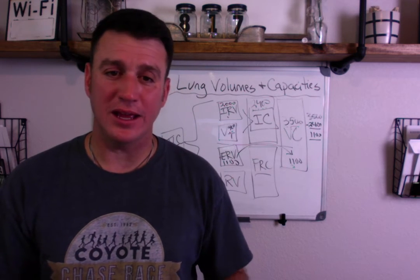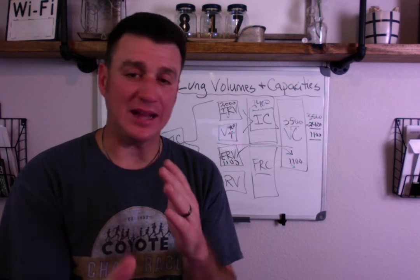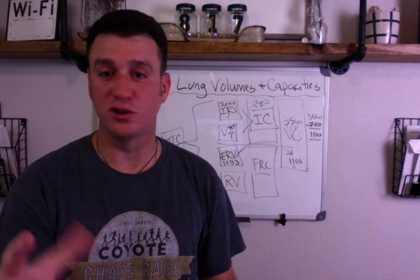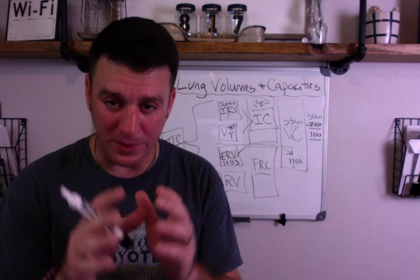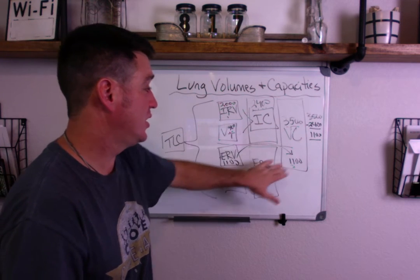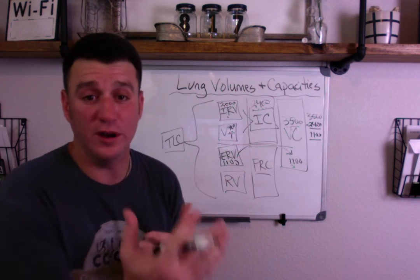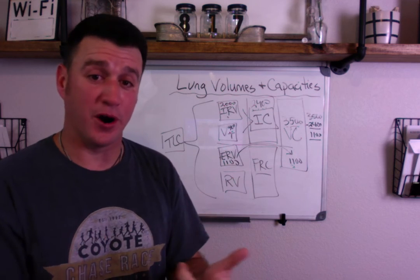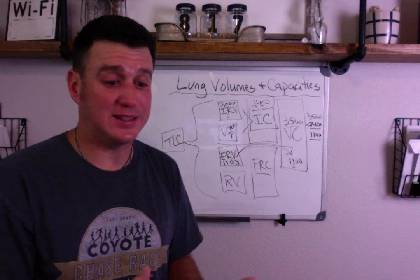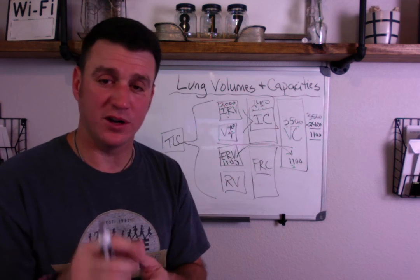The calculating part is secondary to understanding which volumes make up which capacities — that's the underlying message here. There's no secret to calculating capacities, no shortcut, no simplification. It all begins with a fundamental knowledge base and understanding which volumes make up which capacities. When you're told those volumes, or given capacities and one volume, you have to understand that the other component is tidal volume, or the other component is ERV. That's the most simplistic way you can break this down — learning the volumes and which volumes make up which capacities.